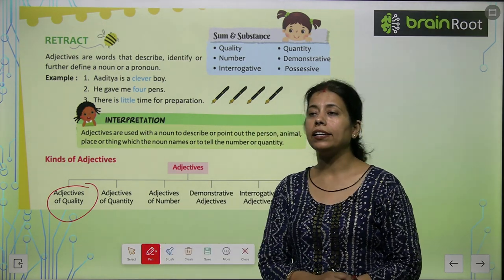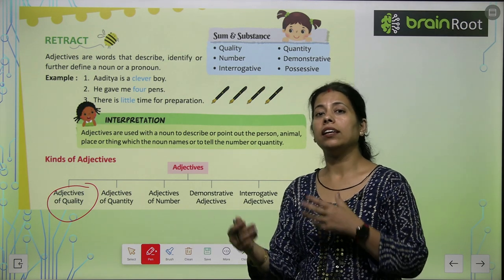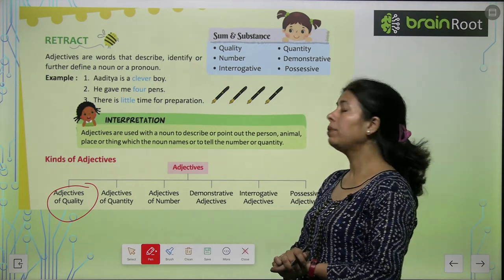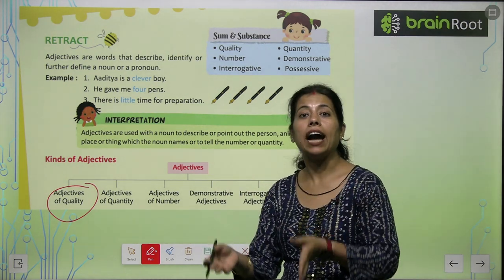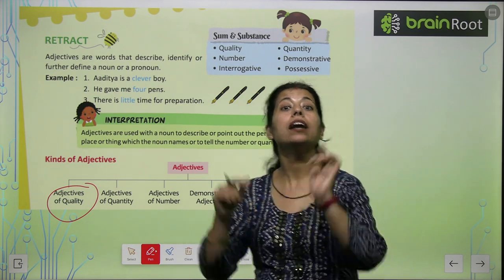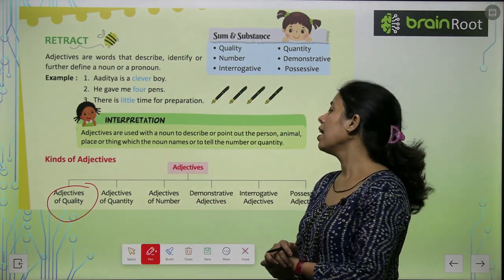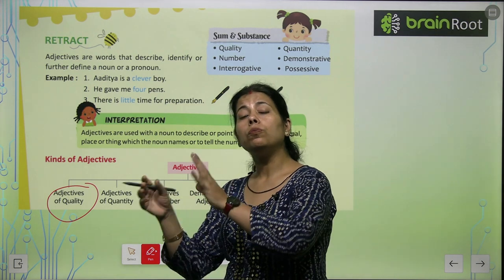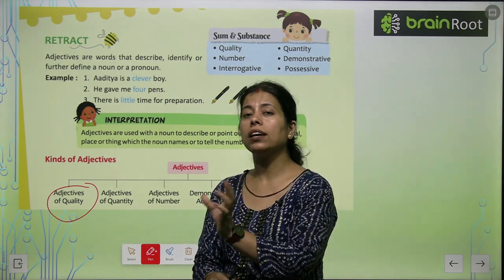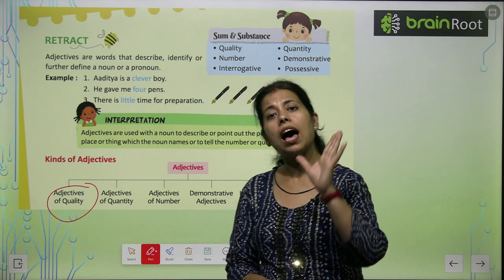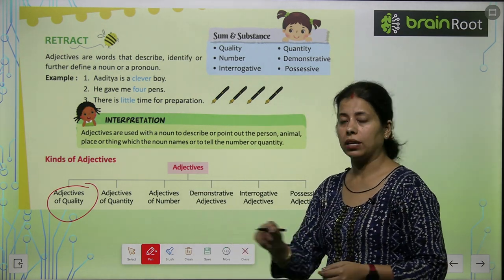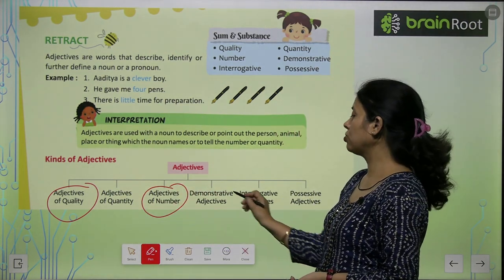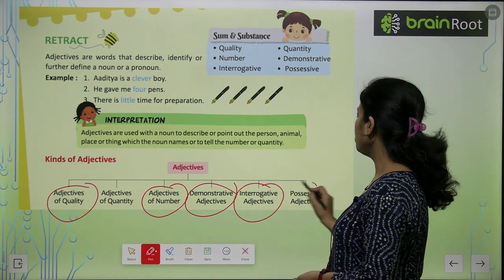Adjective of quantity — मैं चार दिन के लिए दिल्ली गया, तो चार दिन यहाँ adjective of quantity है। उस लड़के की height 5 feet है — यहाँ पर adjective of quantity। मैंने आज थोड़ा सा दूध पिया — milk is noun and little is the adjective. Third one is adjective of numbers. Then demonstrative, interrogative, and possessive। इस chapter में हम इन सब adjectives के बारे में पढ़ेंगे।